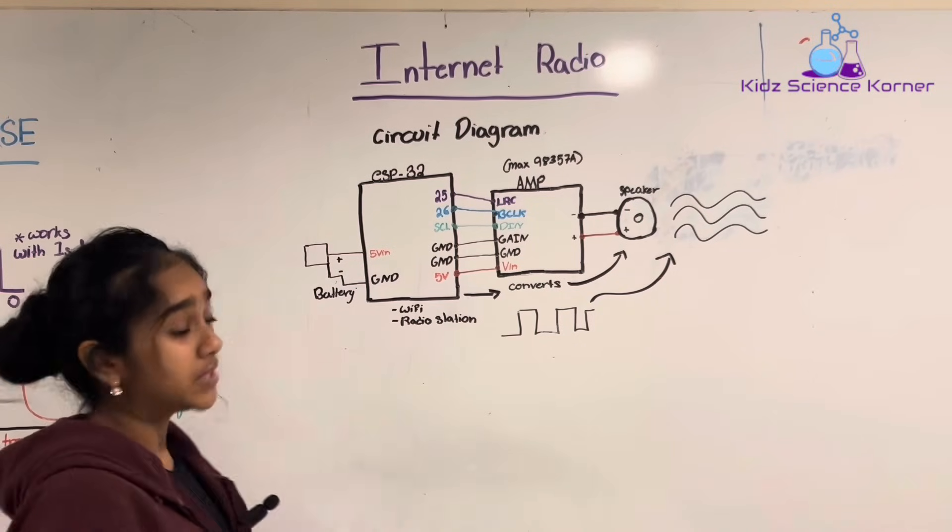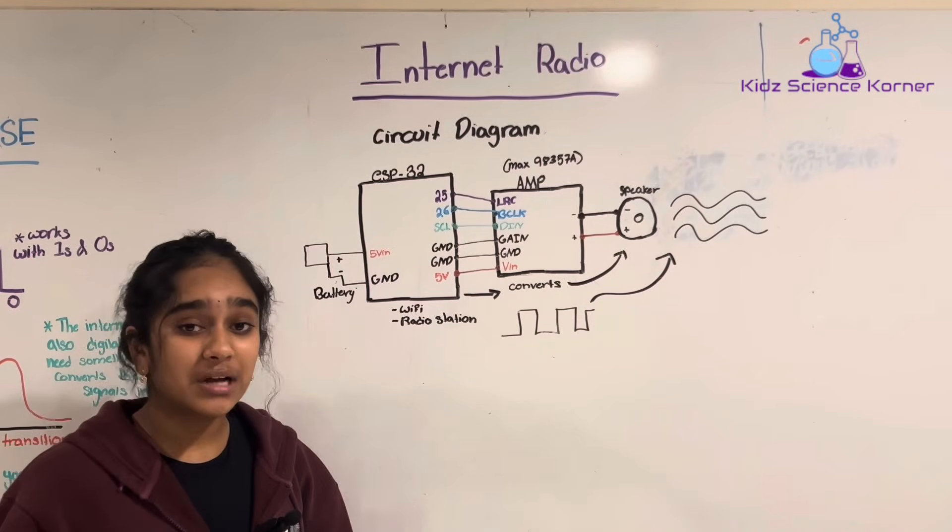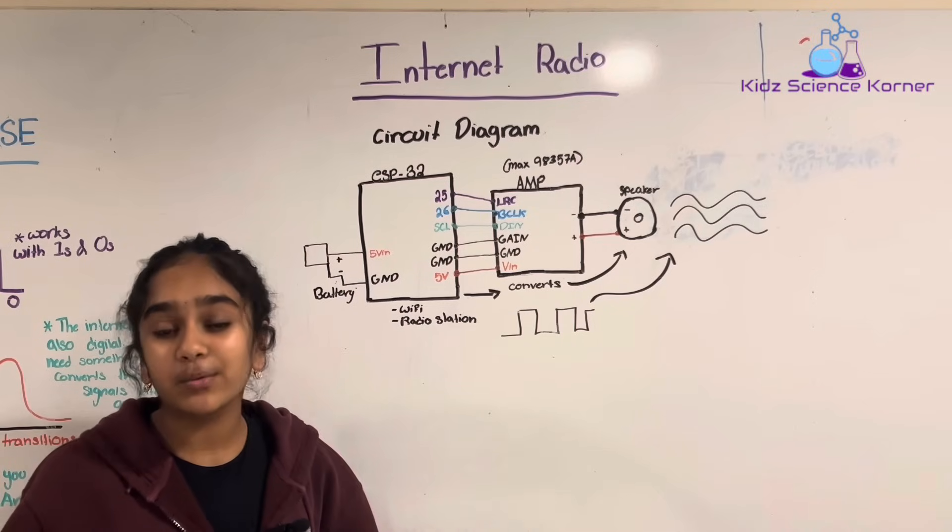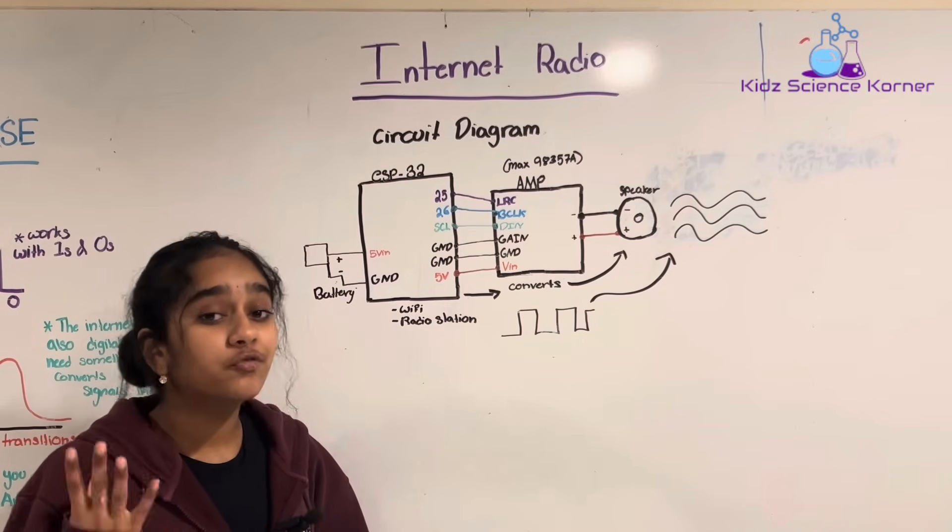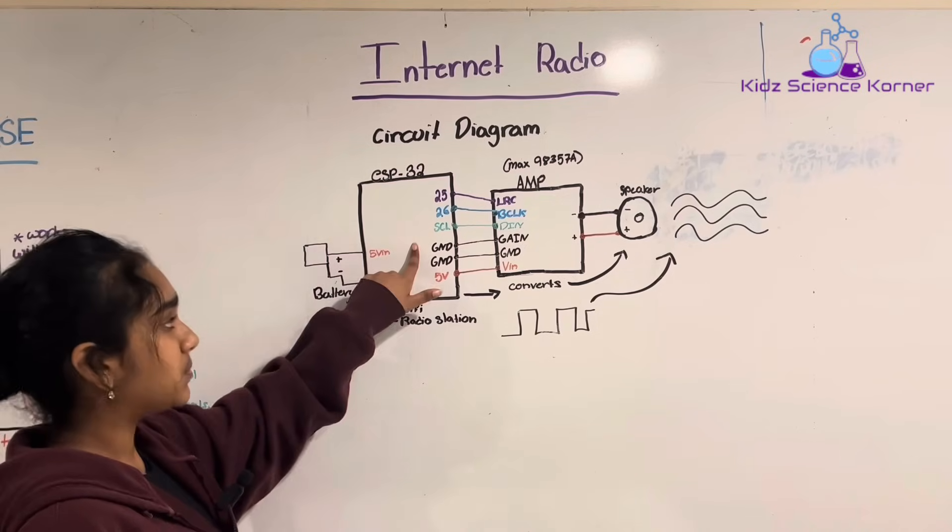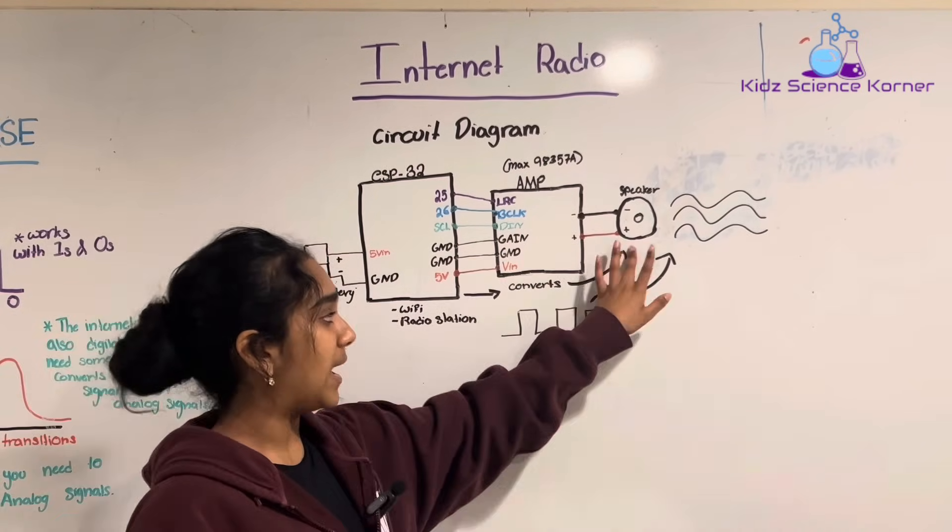Let's talk about the circuit diagram of this project. The circuit diagram explains how all of these components in the project work together to play the radio for everyone to hear. So there are four major components that we're going to be talking about. There's the battery, the ESP32, the amplifier, and the speaker.